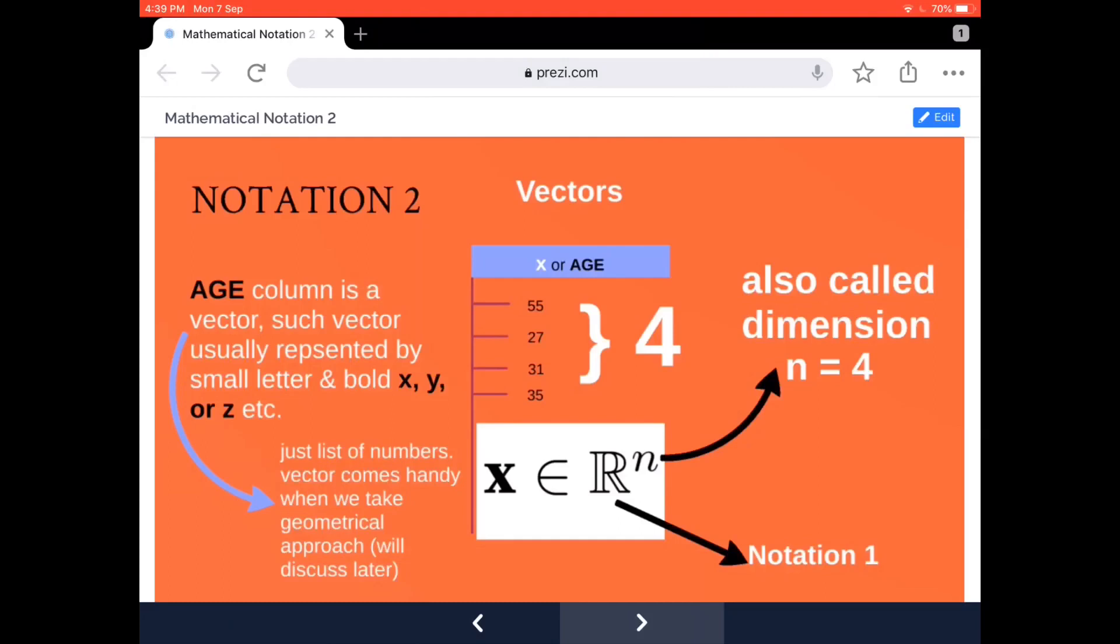which is also called dimension. The character n you see at the exponential place is also called the dimension. So basically this is a four-dimension vector. To mention this mathematically, I would say x belongs to a real number which has four elements, and that would be given by x ∈ ℝ⁴. If I have to generalize it, then